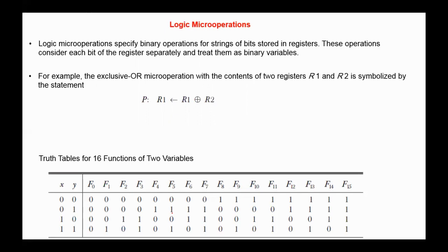Logic Micro Operations specify binary operations for strings of bits stored in registers. These operations consider each bit of the register separately and treat them as binary variables. For example, this statement XORs the contents of registers R1 and R2 and stores the result in register R1, provided that the control signal B is true.